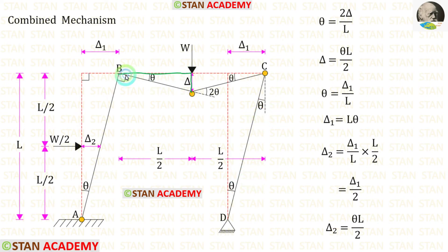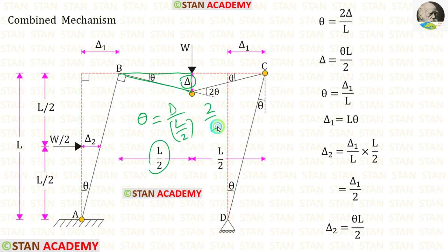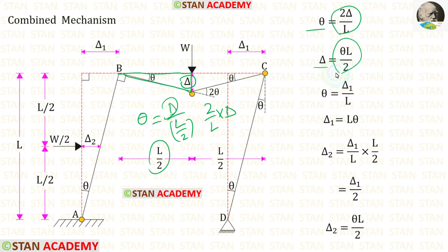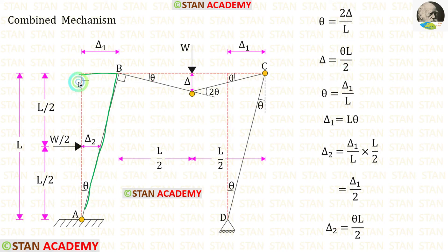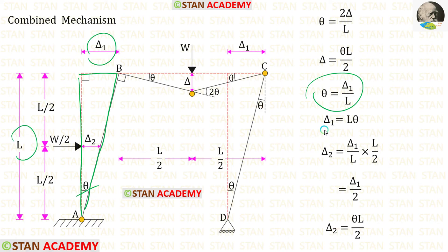Let us take this triangle. In this triangle θ = δ / (L/2). Taking L/2 inversely and multiplying with δ, we get θ = 2δ/L, so δ = θL/2. For the next triangle, θ = δ1/L, giving δ1 = Lθ.